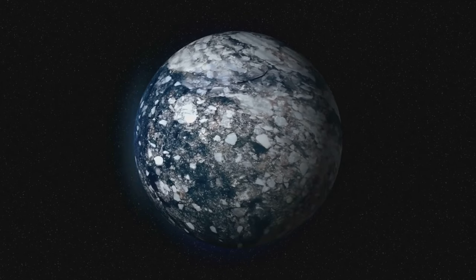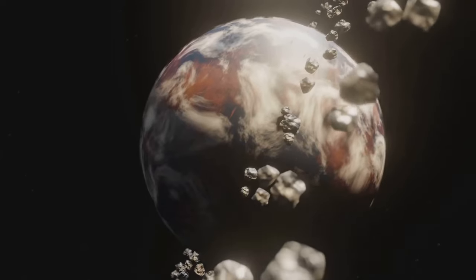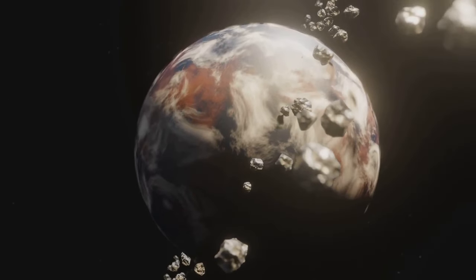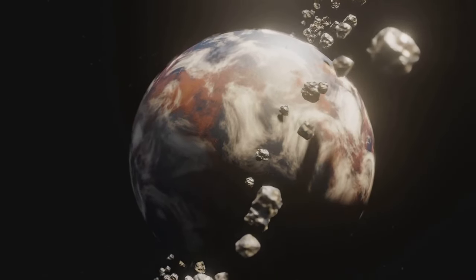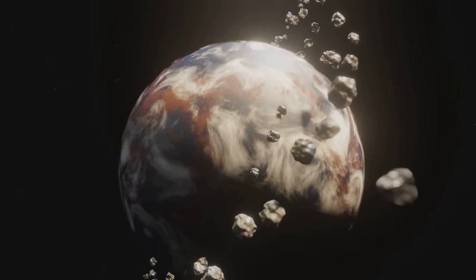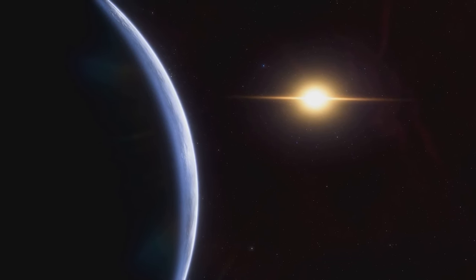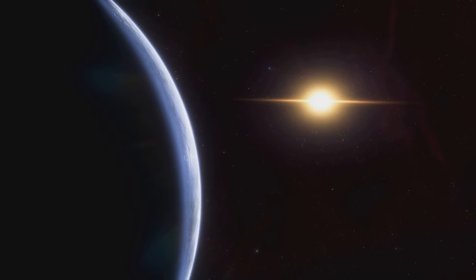Both planets are thought to be composed of similar materials: rock and metal. This similarity is important because it suggests that super-Earths like Gliese 581c might form in ways similar to how Earth formed. This is exciting because it opens up the possibility that other Earth-like planets could be out there just waiting to be discovered.